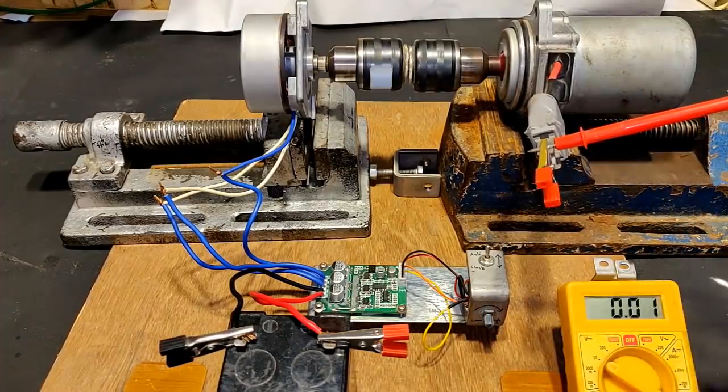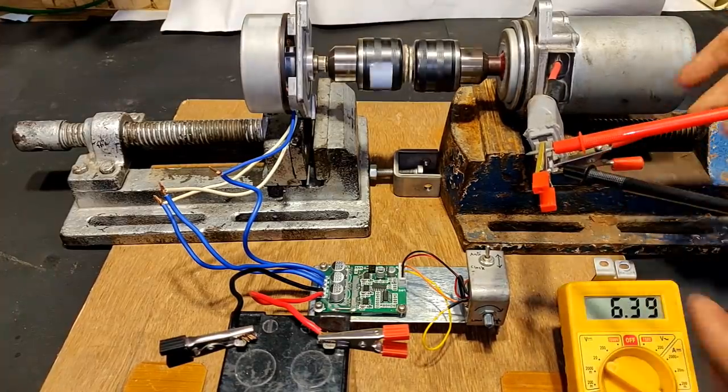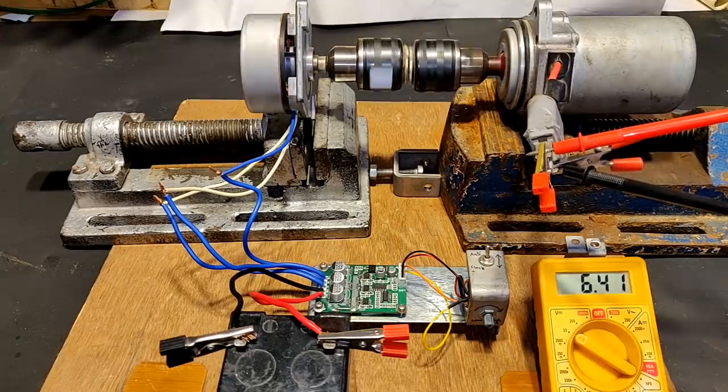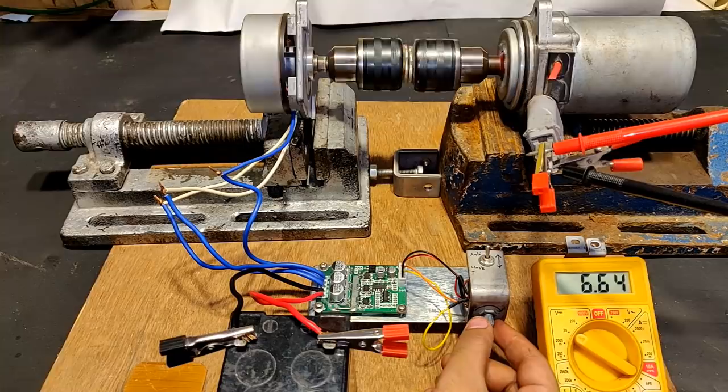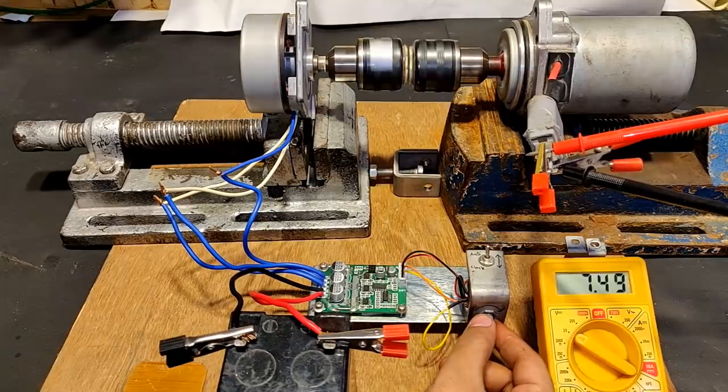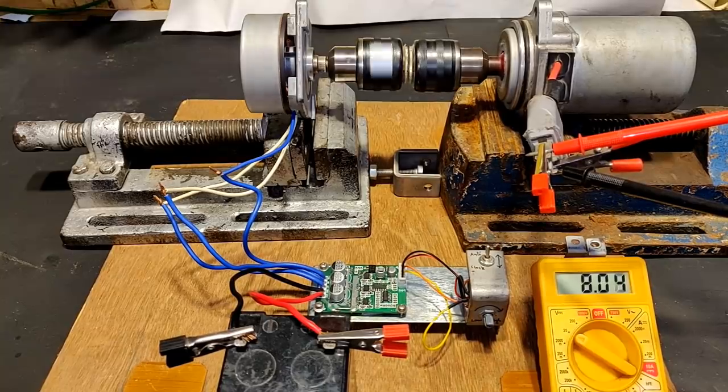You can see that it is generating around 6 volts, 6.41. Let's increase the speed with the help of this controller - 6.64, 7 volts, 7.5. It has got to a speed of around 8 volts which is pretty good.